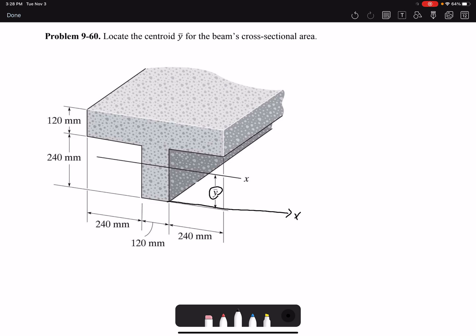I'm going to divide this composite body into two simpler geometries: here geometry 1, and then this rectangle would be my geometry 2. I want to find Y bar.